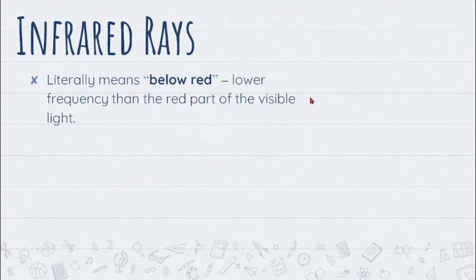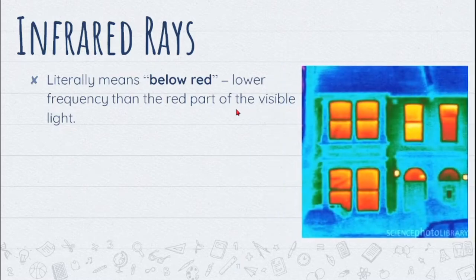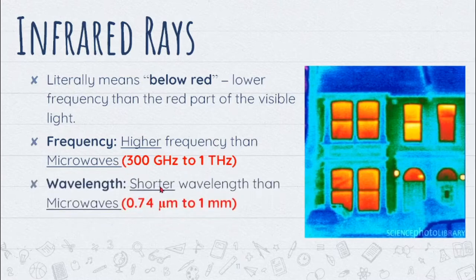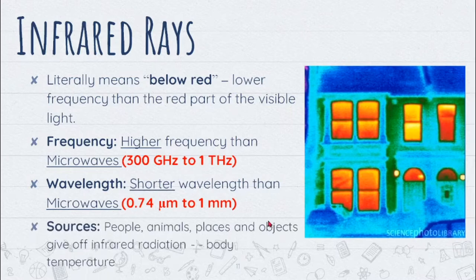Next, we have infrared rays. In terms of its definition, it means below red — infra means below — so it is below the red of the frequency that can be found in the visible light. In terms of frequency, it has higher frequency than microwaves. In terms of wavelength, it has shorter wavelength than microwaves. One major source of infrared is humans, as well as animals, places, and objects that give off infrared radiation or body temperature.